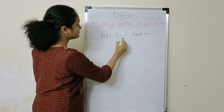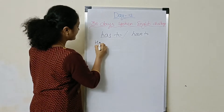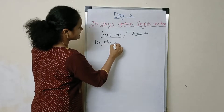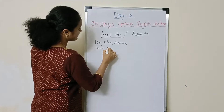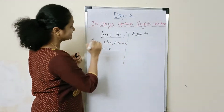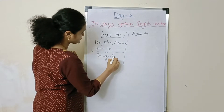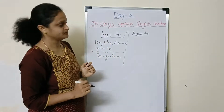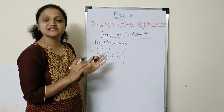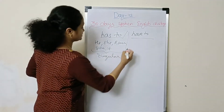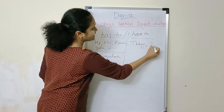Has to is used with singular subjects — he, she, Ram, Sita, it. If the subject is singular, we use 'has to.' And if the subject is plural, we use 'have to.' Plural subjects include they, and also I and you.